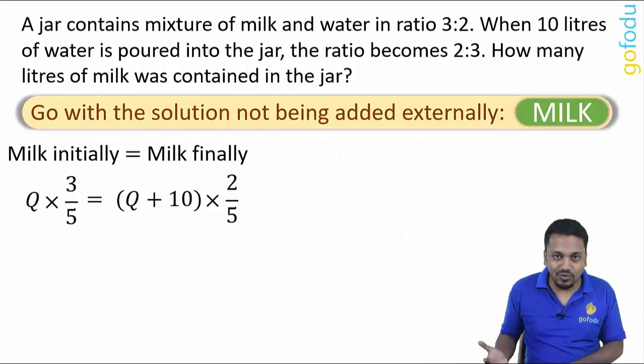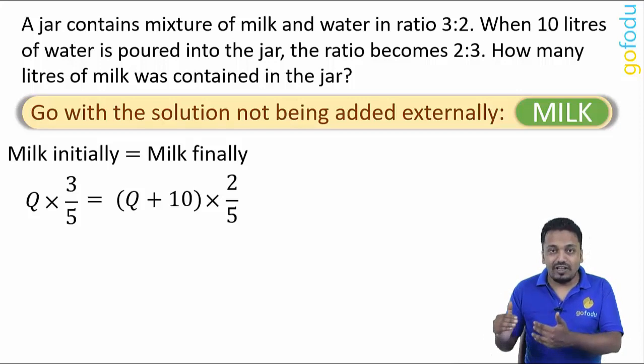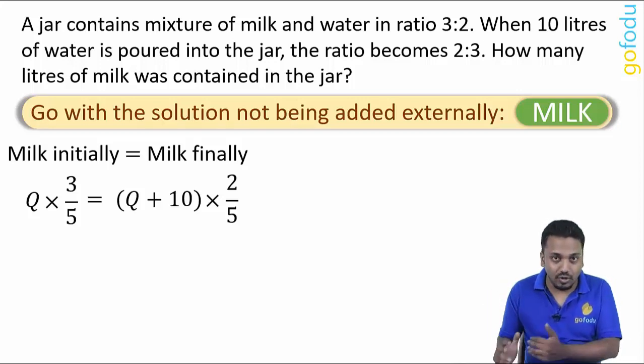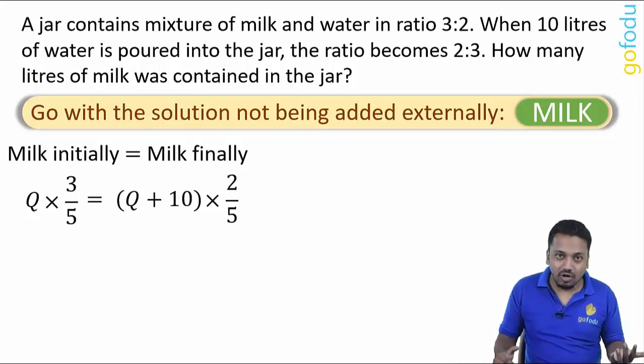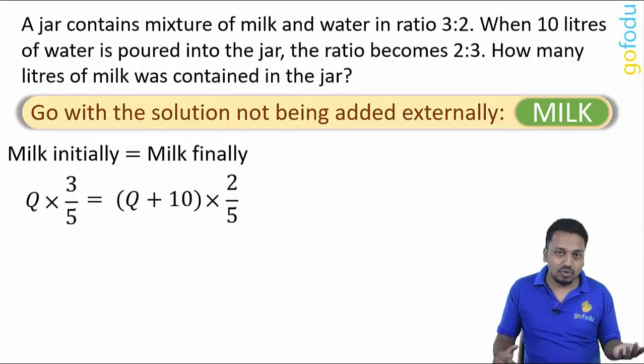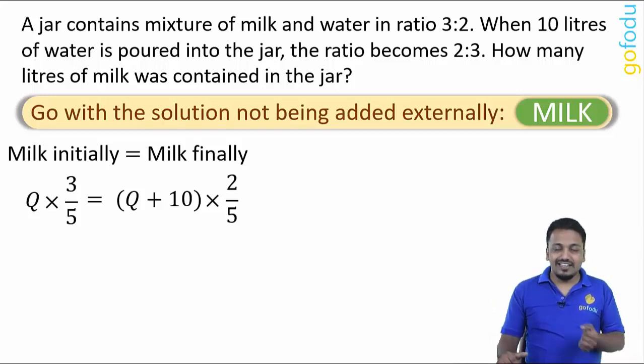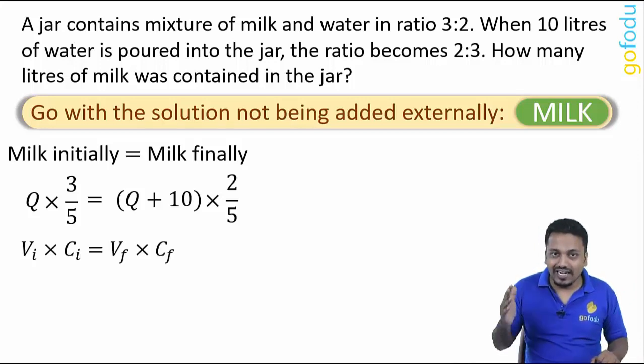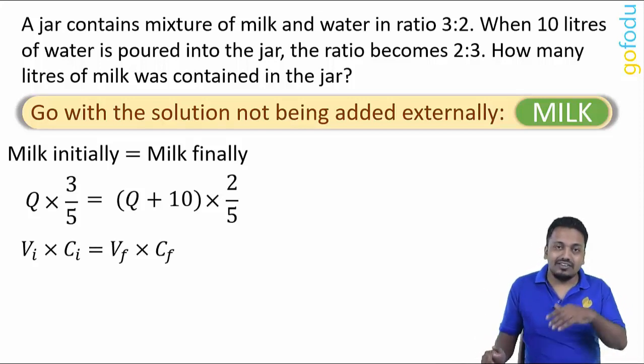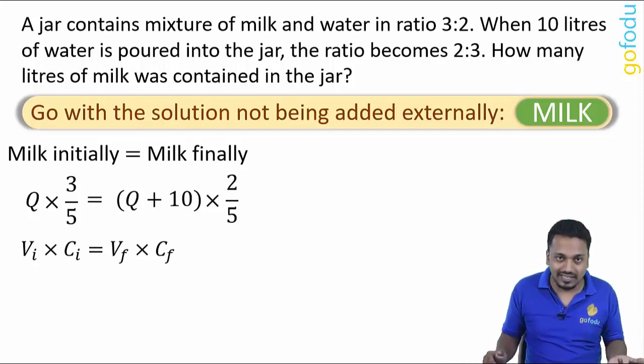Left hand side is Q × 3/5 where Q is initial volume and 3/5 is initial milk proportion or initial C value. And right hand side is final volume into final milk proportion. Basically this means V_i × C_i = V_f × C_f. Initial volume into initial concentration is equal to final volume into final concentration.